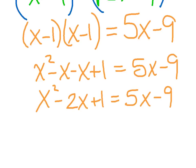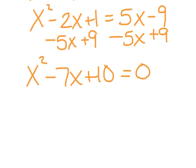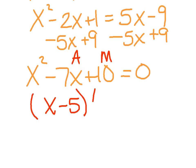Now we have a quadratic equation — an x squared term — which tells me I have 2 roots because my highest exponent is 2. I want to set this equal to 0, so I'm going to subtract the 5x and add 9 to both sides. That leaves me with x squared minus 7x plus 10 equals 0. Before I try the quadratic formula, I'm going to attempt to factor first. Remember, I want to add and multiply — so I'm going with x minus 5 and x minus 2.